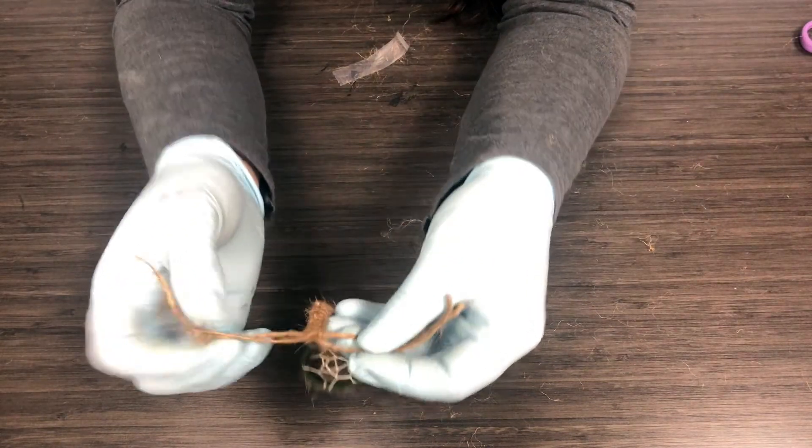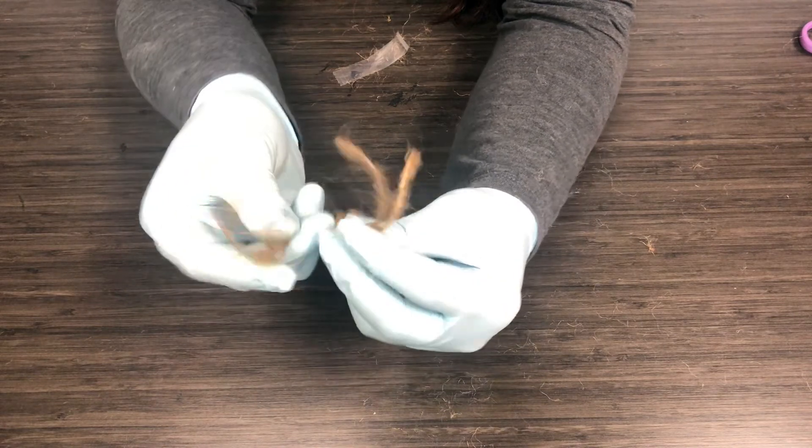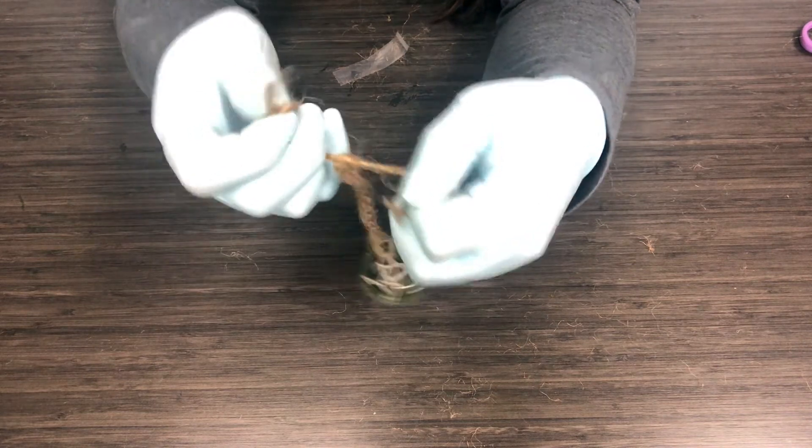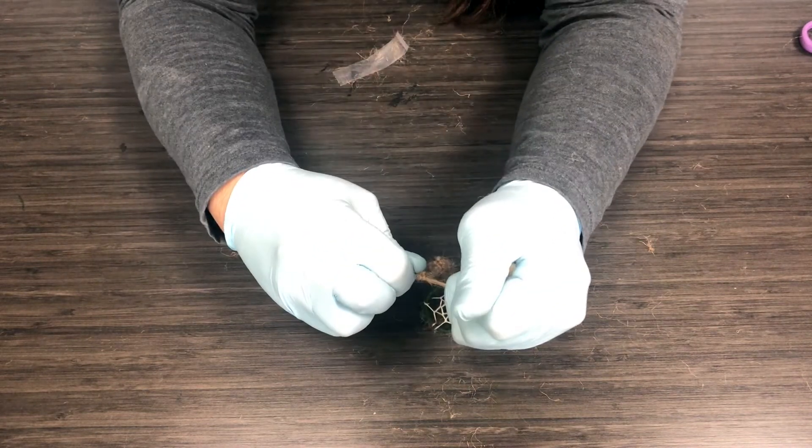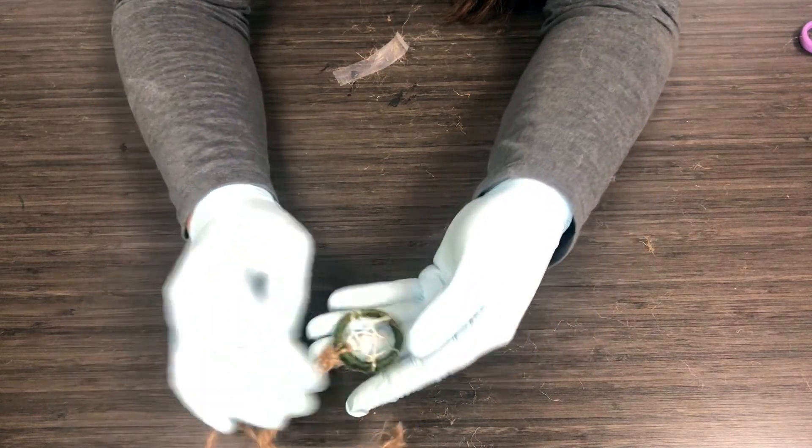Okay. Once you get to the end, I take the middle strands and the one next to it and I just tie one little knot here, just to make sure that it's not going to come apart. Okay. Now we do the other side.